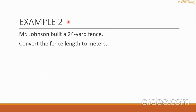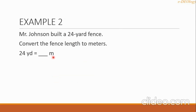Example 2: Mr. Johnson built a 24-yard fence. Convert the fence length to meters. In symbol, we write 24 yd equals blank M. The conversion equation we will use is 1 yard equals 0.914 meter.